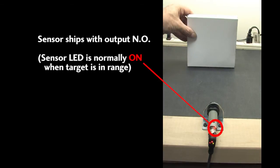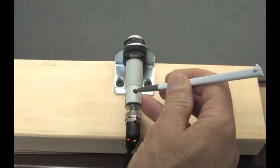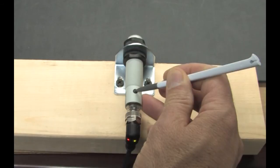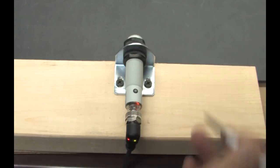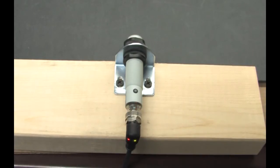This sensor ships with the output normally open so it closes when a target is found. What if you want to invert that? Well, that's easy. Just hold the button down for 8 seconds until the LED starts to blink fast. Release the button. The LED blinks slowly. When the LED stops blinking, the polarity inverts.